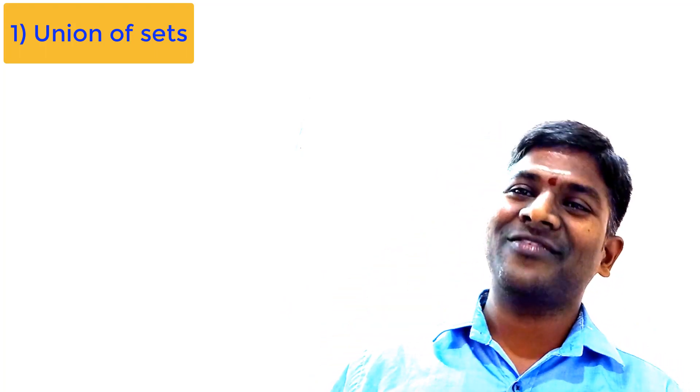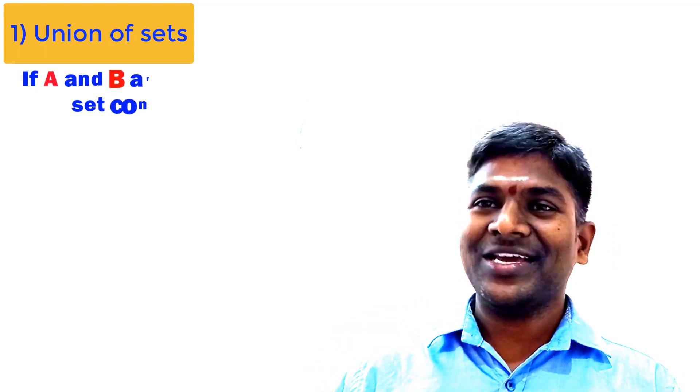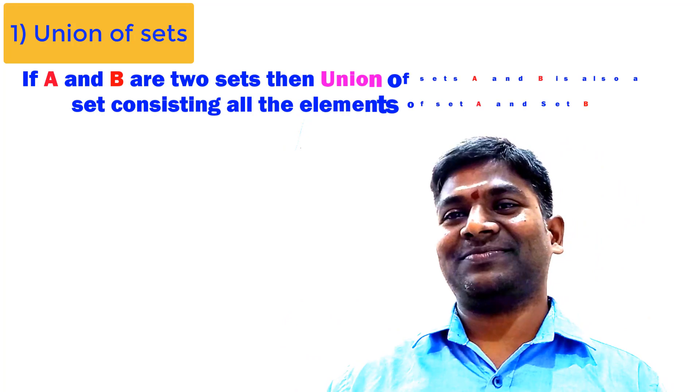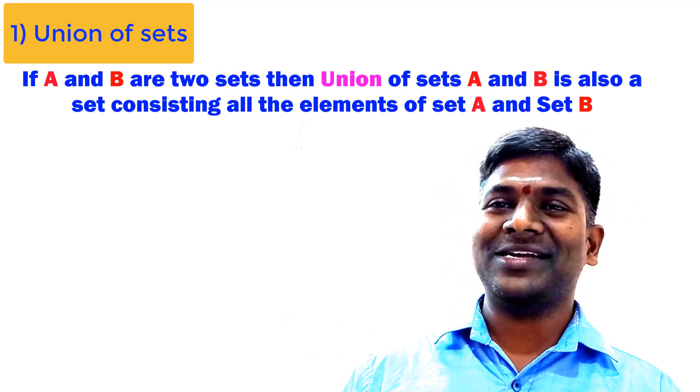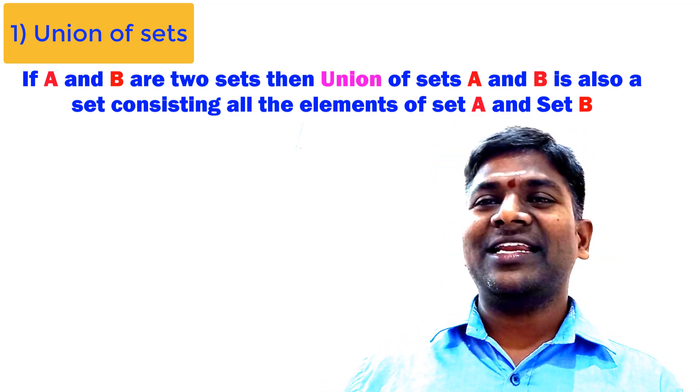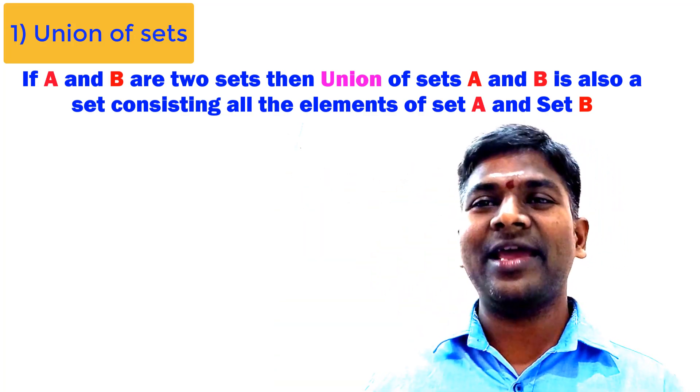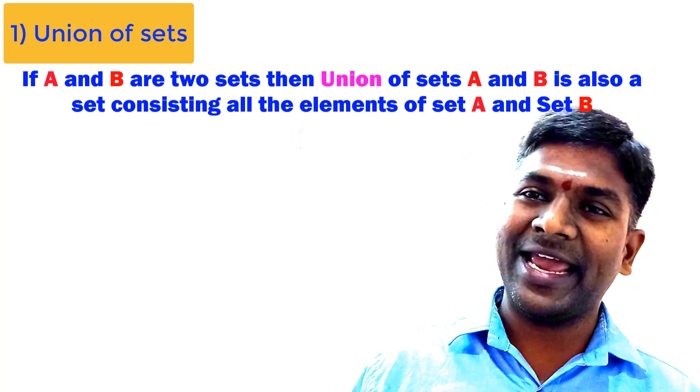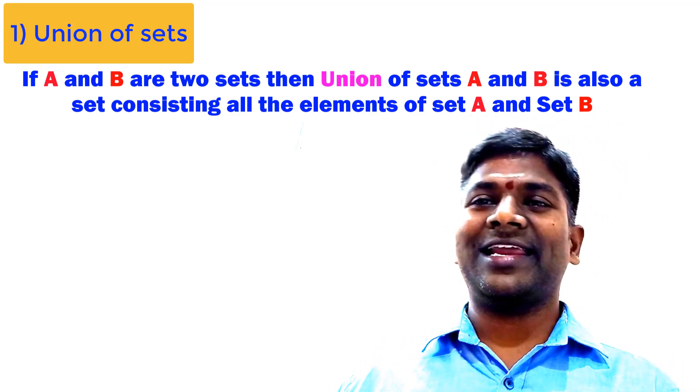Let us look at union of sets. What is the union of sets? It is not like addition, not like subtraction. It is a particular operation that can be done on sets. A and B are two sets. Union of A and B is also a set, which consists of all the elements of A and B. Elements in union of A and B are the elements from A and the elements from B. We can understand this perfectly with an example.